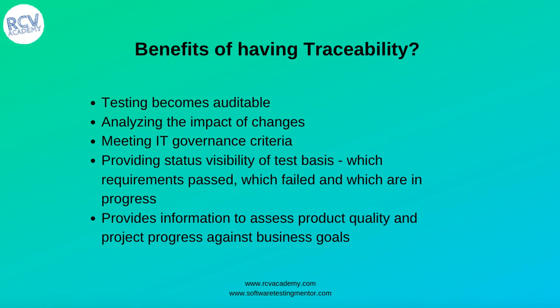Traceability also helps you analyze the impact of changes. For example, using bi-directional traceability, if a defect arises and requires a requirement change, you can determine how many new test cases or how much rework is needed. If testing a particular change requires 50 new test cases, that gives you a clear idea of whether the change is big or small, helping you analyze the full impact.